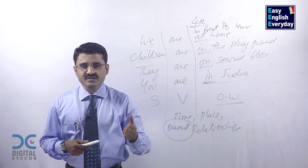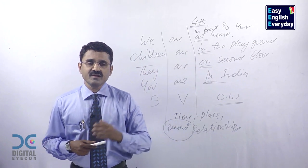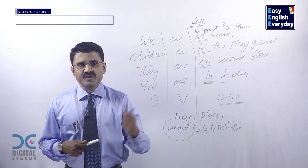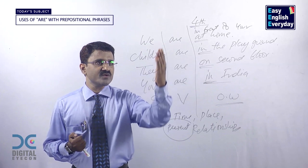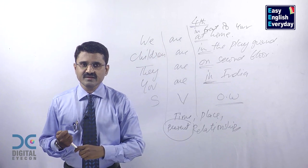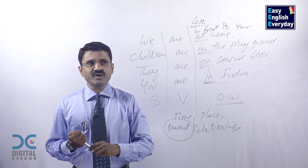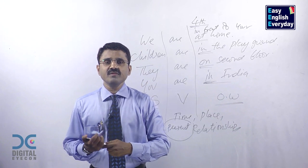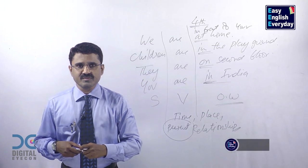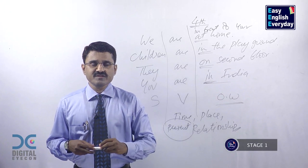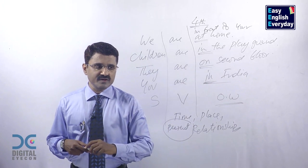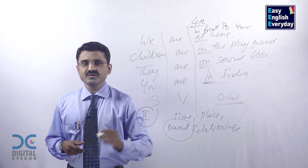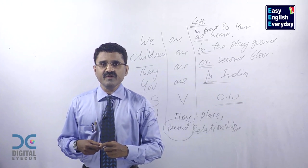We are in front of your house — that's a prepositional phrase. We are behind your house — that's a prepositional phrase. We are beside your house — that's a prepositional phrase. We are opposite your house — that's a prepositional phrase. If you have more prepositional phrases, you can make more sentences like this. This is stage one: make sentences and read them, repeat them loudly as many times as possible. Once you gain confidence making sentences with prepositional phrases, go to stage two to learn and practice variations.